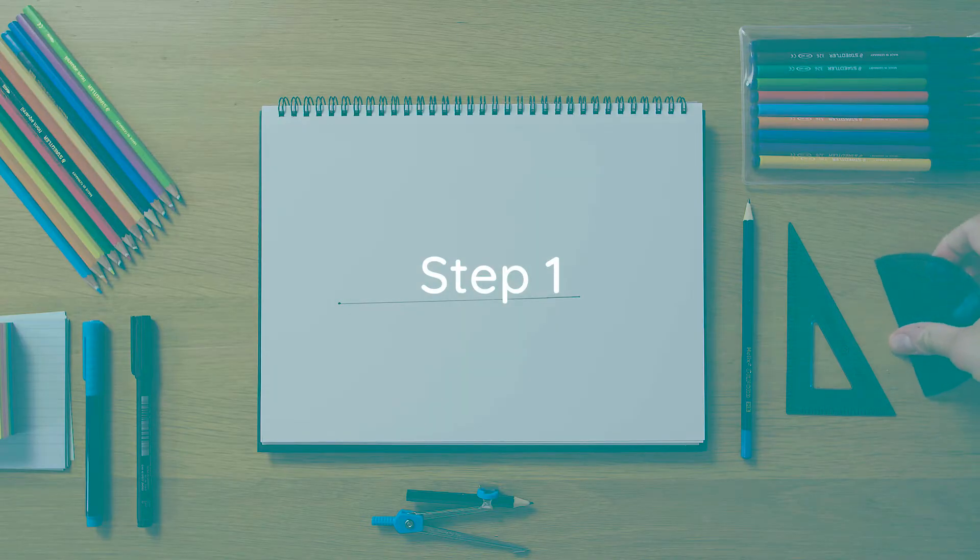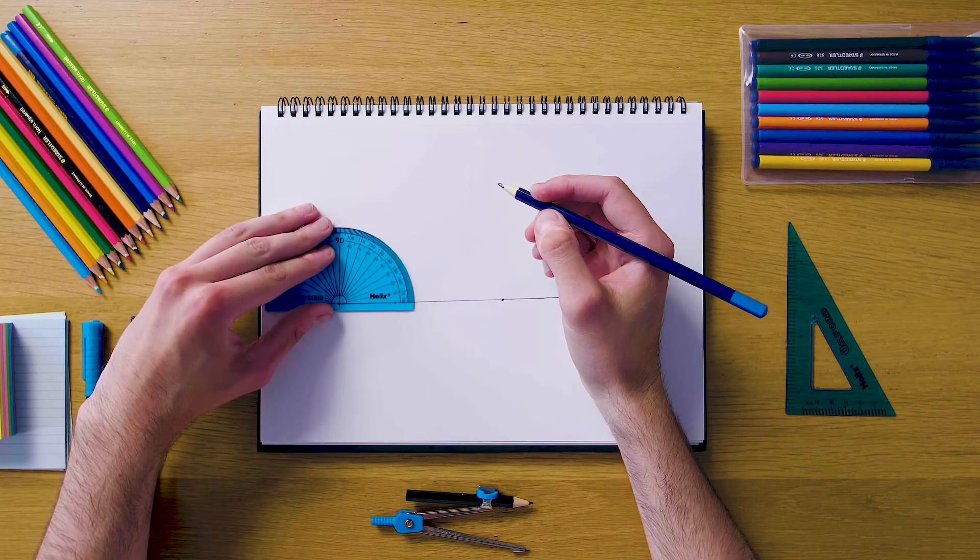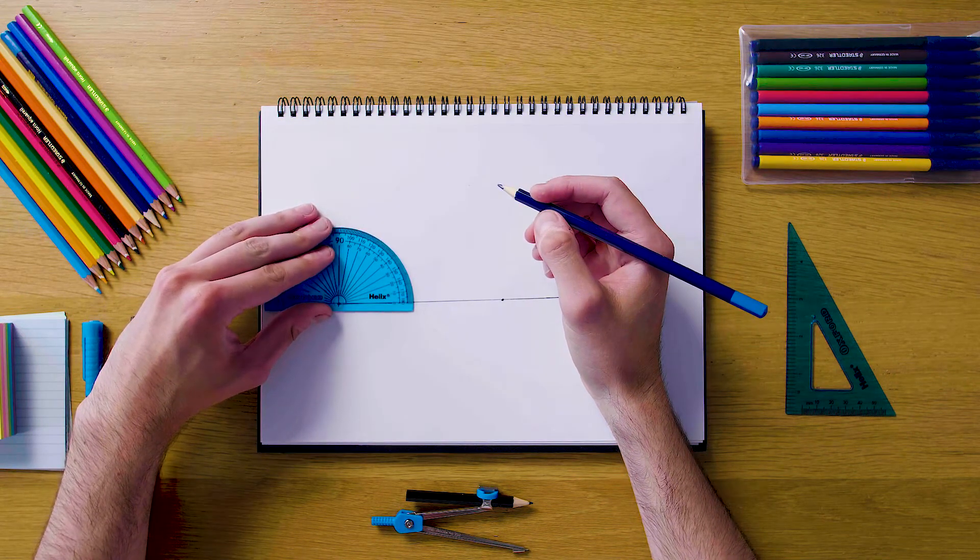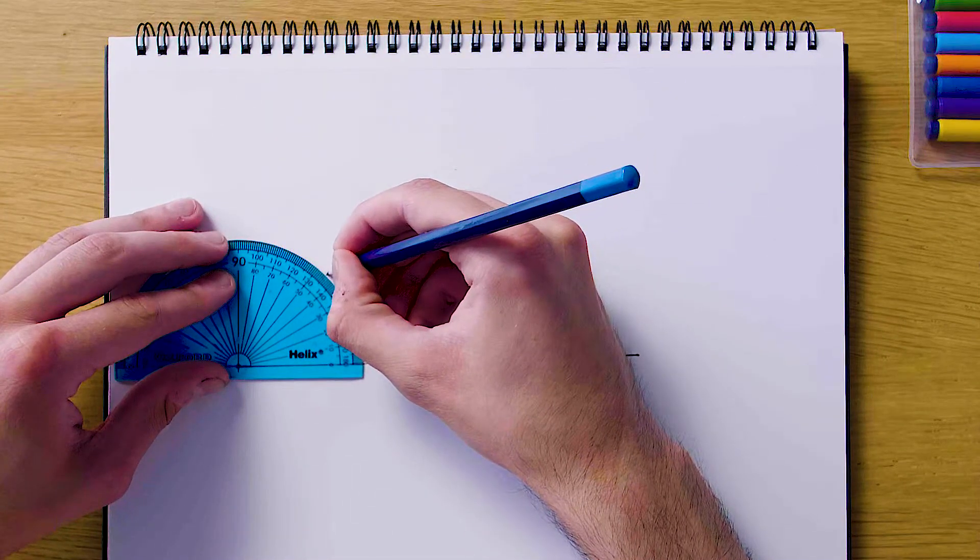Okay, so the first stage of this construction is to use the protractor to get our angle. For this one we're going to do an angle of 45 degrees, so we're just going to line this up perfectly with our point here on the left and make a really nice obvious pencil mark where 45 degrees is.